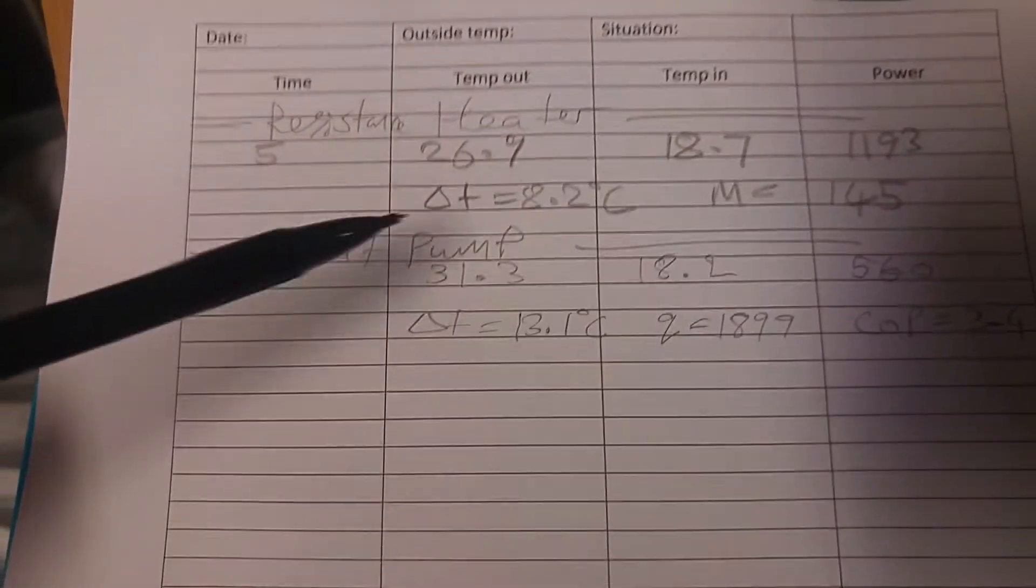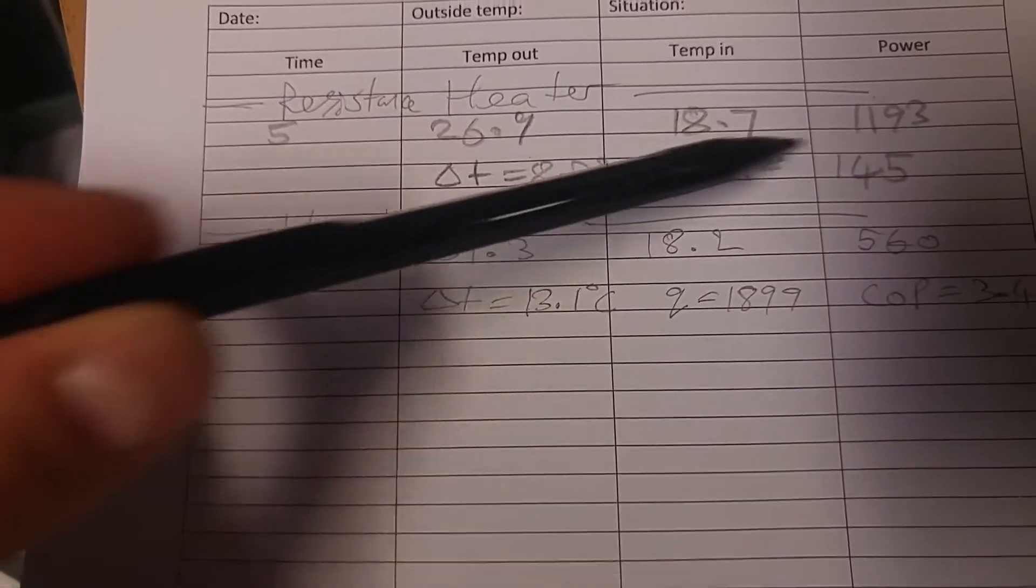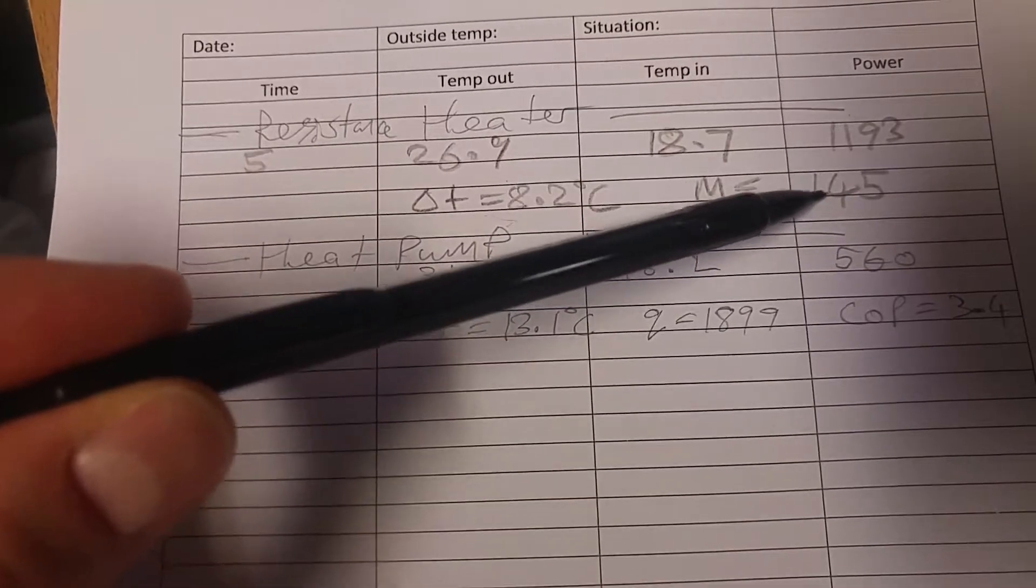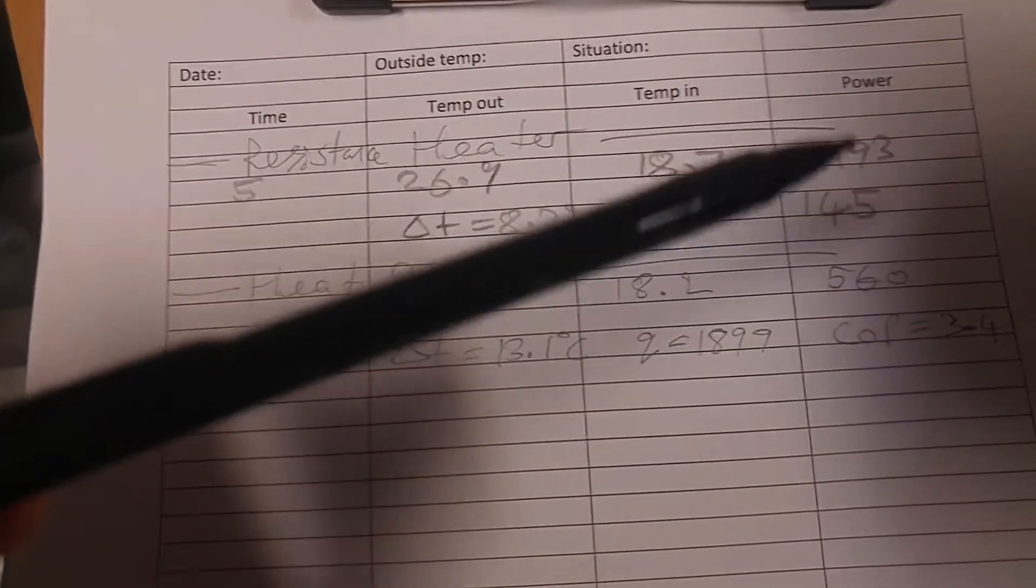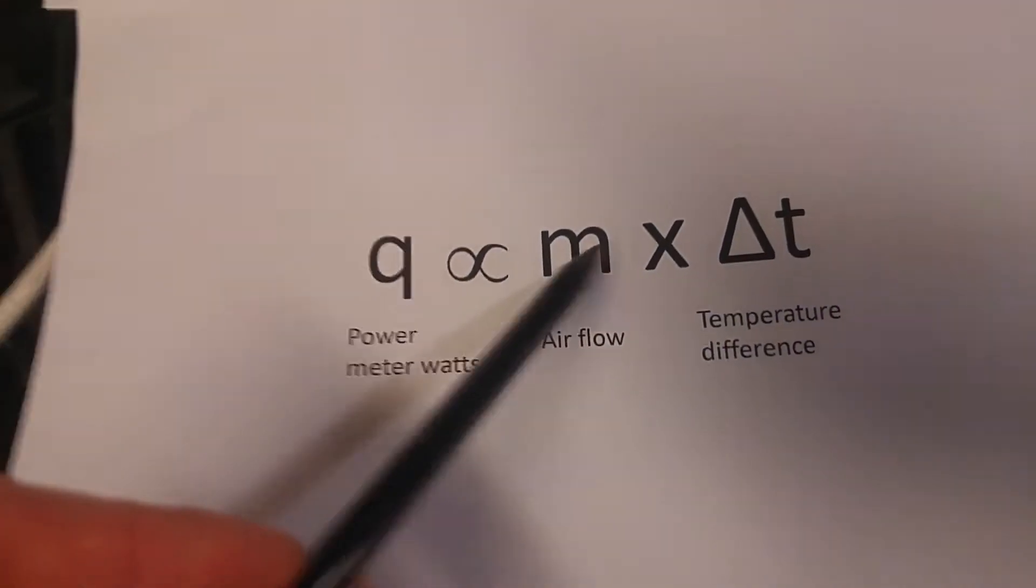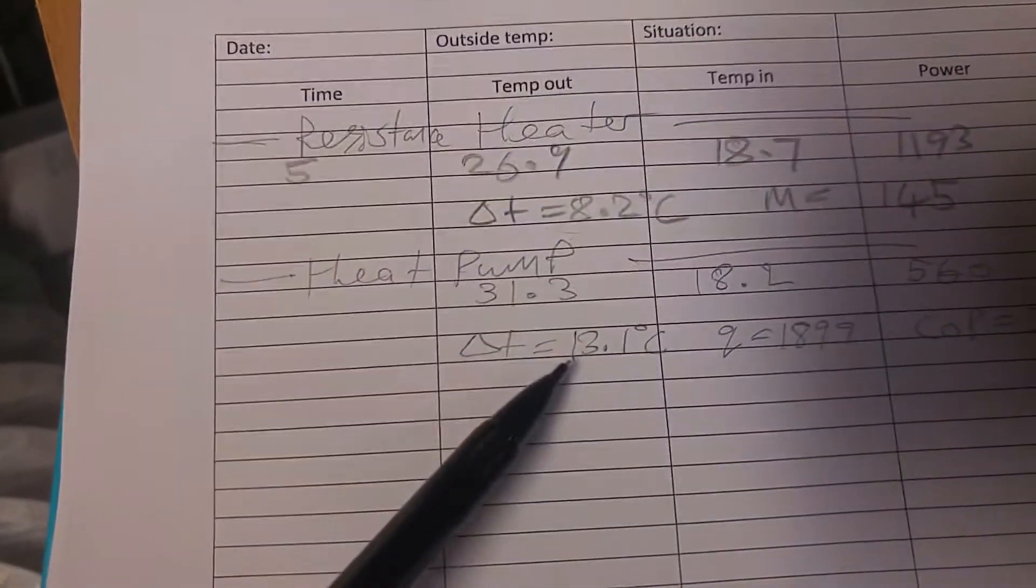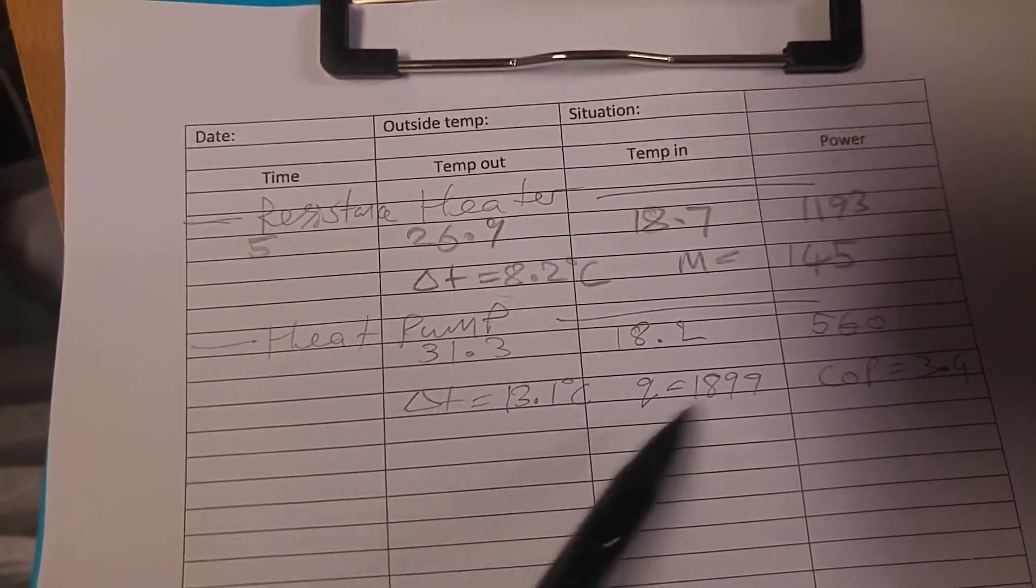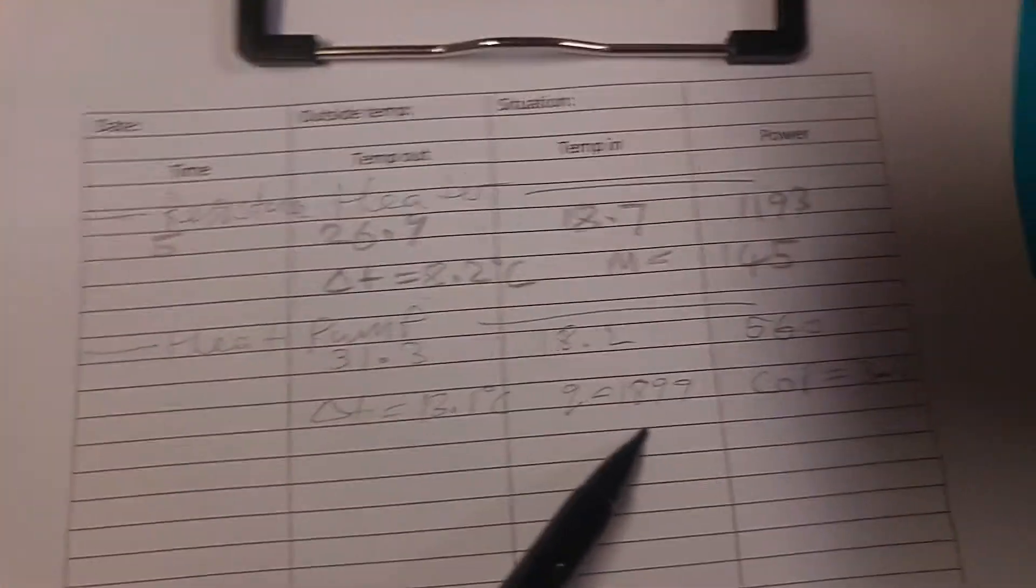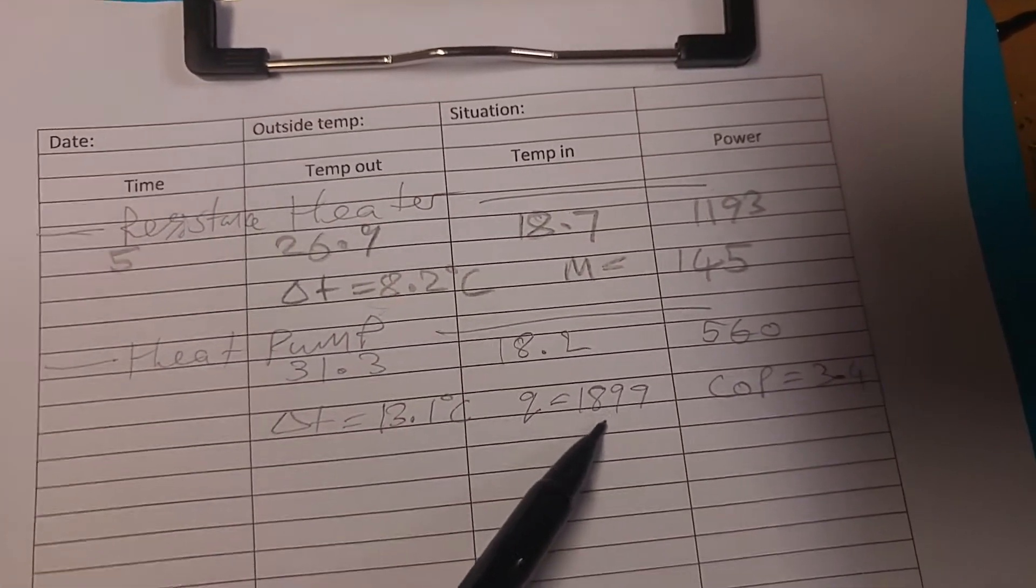Here are the numbers. That's the result for the heater, the resistance heater, where we've got the mass flow rate of 145. And then with the equation, let's plug that into there, times the heat pump delta T was 13. So that times that gives you that. And that is the power output of the heat pump.